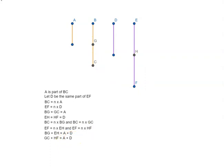So we can say BC plus EF is equal to n times A plus D. What does this tell us? It tells us that A plus D is the same part of BC plus EF as A is of BC.